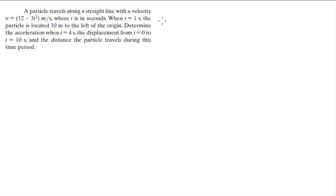So first, let's find the position. Since we are given the velocity, you know that the position is equal to the integral of the velocity over time, which is equal to 12t minus t cubed plus C.